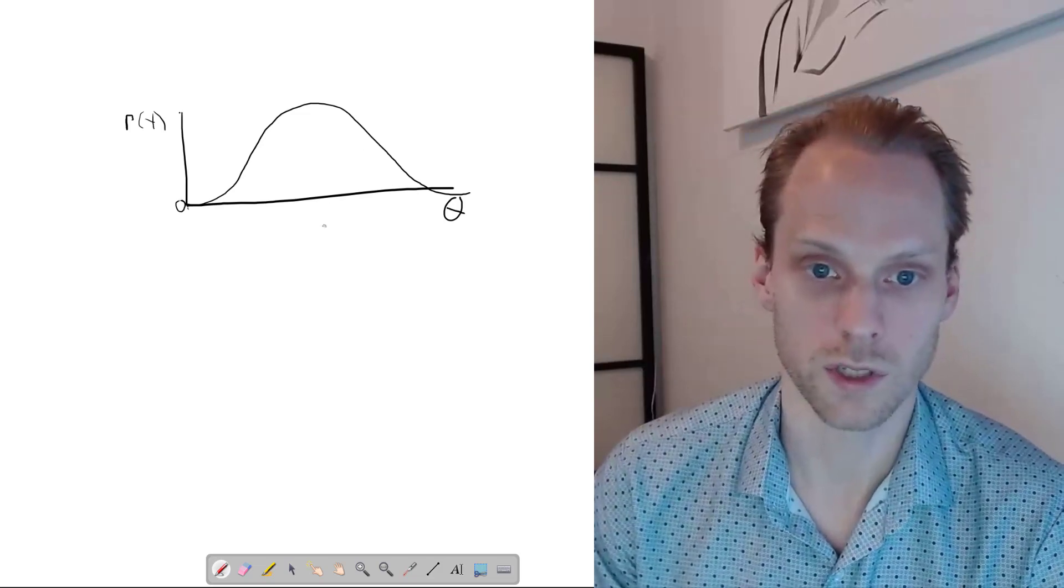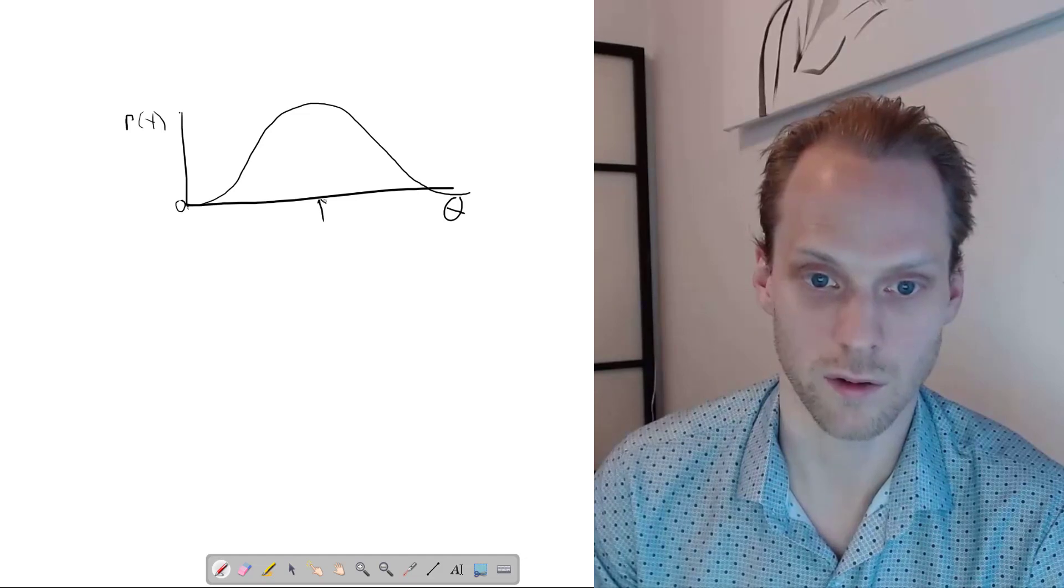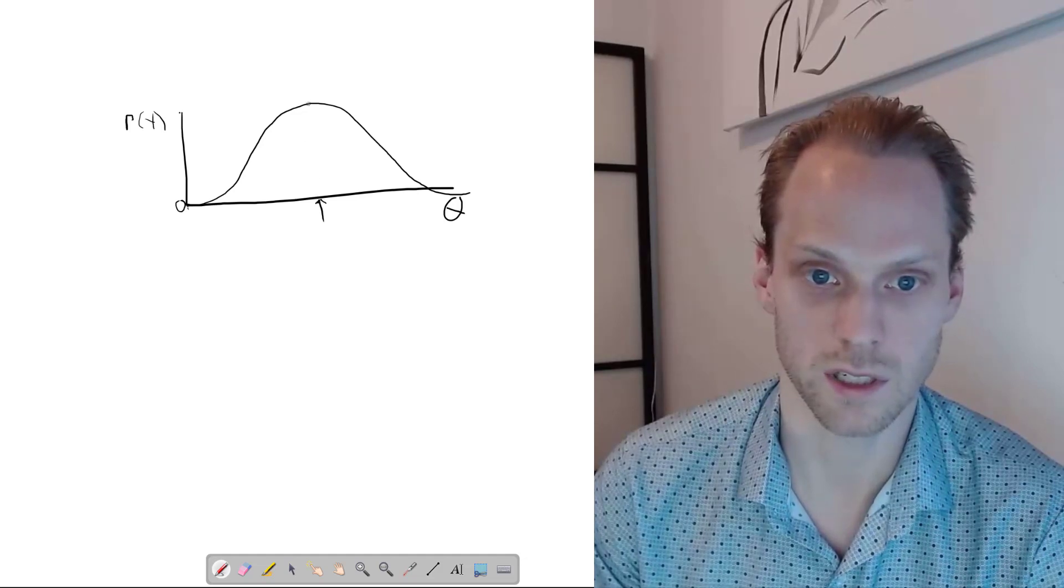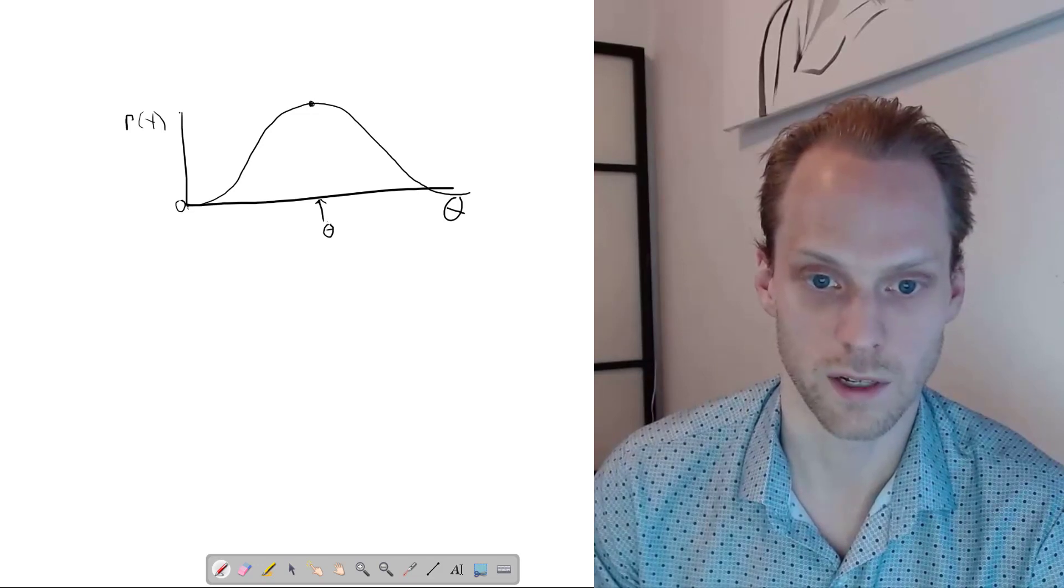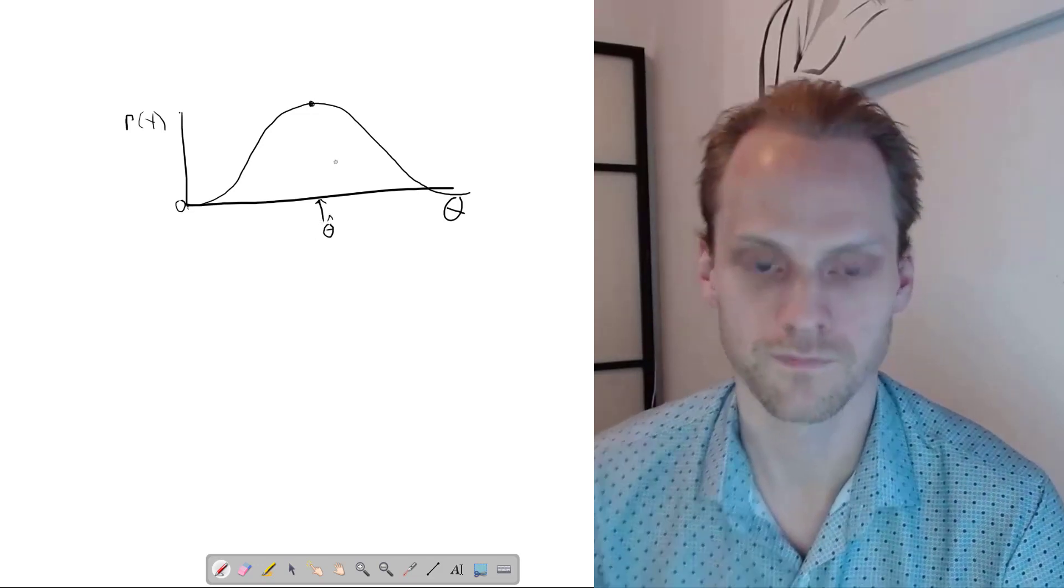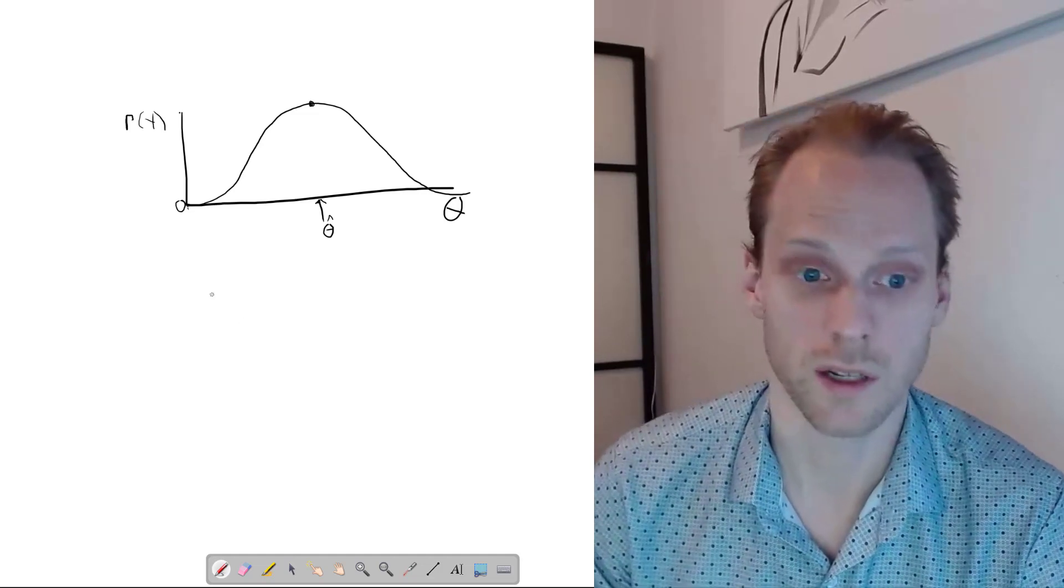And then we choose as estimate for our parameters, the point where our likelihood function is maximized, which is here. You should then call theta, usually like a hat, or something like that. And that's really the main idea behind maximum likelihood estimation.